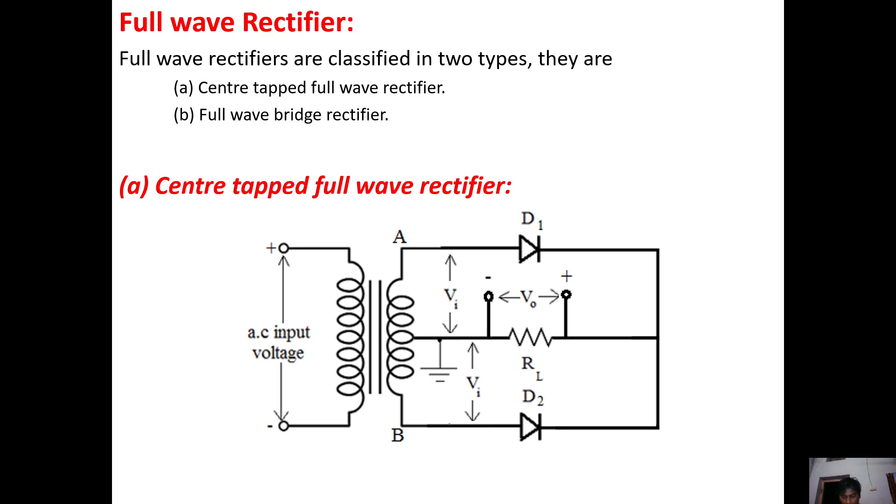During the positive half cycle, point A has positive voltage. Due to this, diode D1 is forward biased and turns on, resulting in positive voltage appearing at the output. Point B has negative voltage, so diode D2 is reverse biased and turns off.